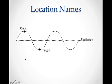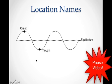Now there are some location names on waves that we use sometimes. The very top of a wave is called its crest, and then the very bottom of a wave is called its trough. Where the medium would be balanced if there were no disturbance is called equilibrium. So please note these location names.